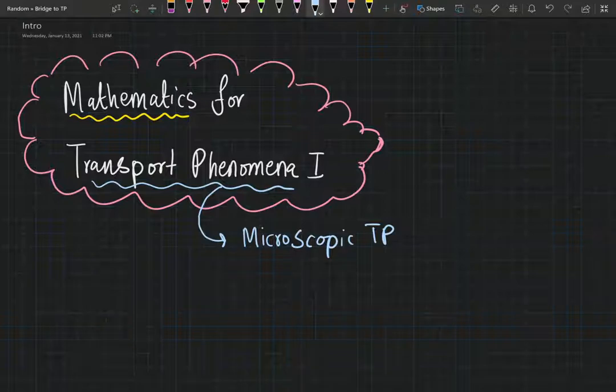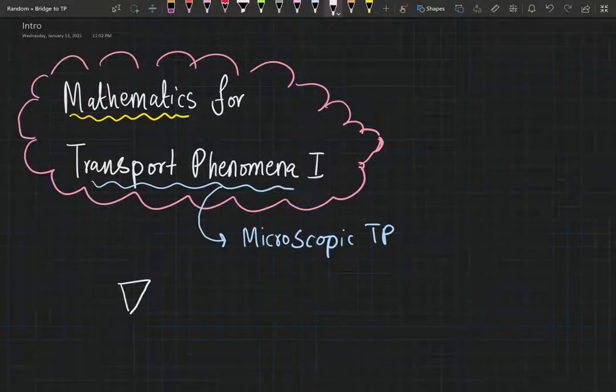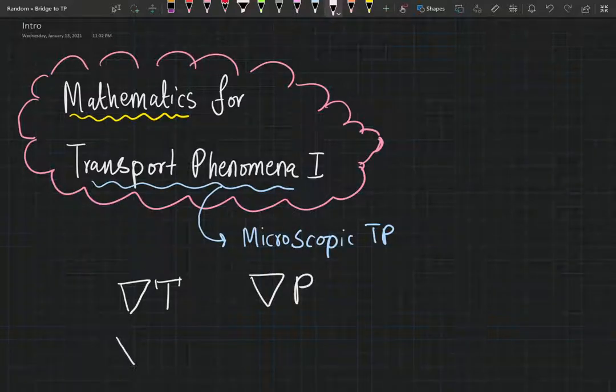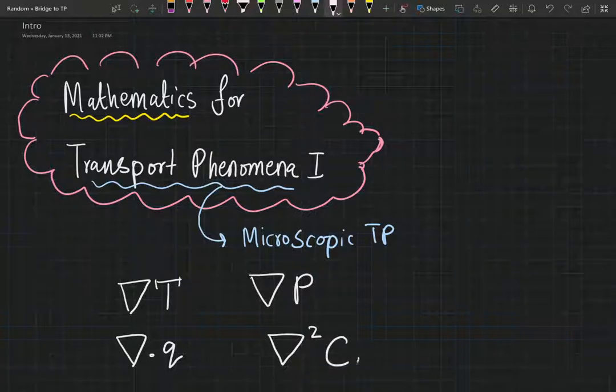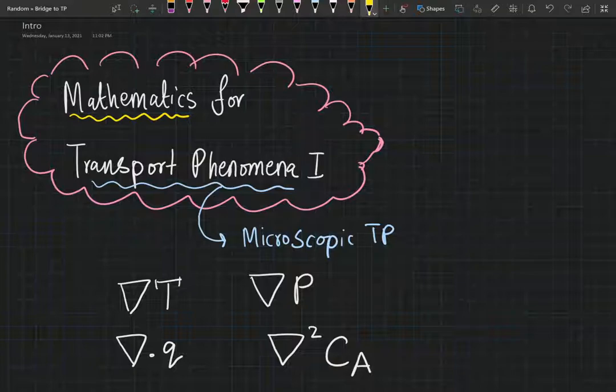When you will be studying this subject, you will be seeing a lot of terminologies like gradient of temperature, gradient of pressure, the divergence of the heat flux, and the Laplacian of the concentration of species A. In order to fully understand and appreciate this subject, you need to know what all this notation means.